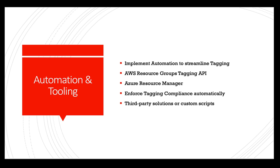Implement automation and tooling. Leverage automation tools and scripts to streamline the tagging process. Explore cloud provider services such as AWS Resource Groups Tagging API or Azure Resource Manager to enforce tagging compliance automatically. Additionally, consider third-party solutions or custom scripts that can automatically apply tags based on resource attributes, metadata, or predefined rules.